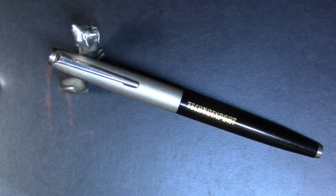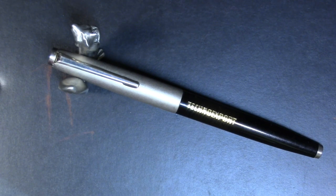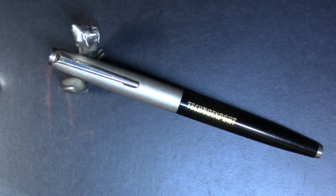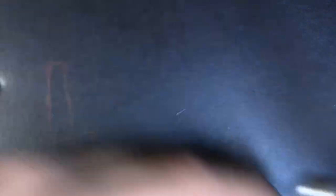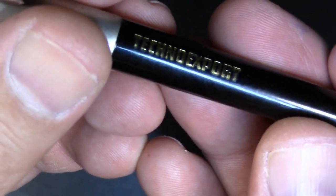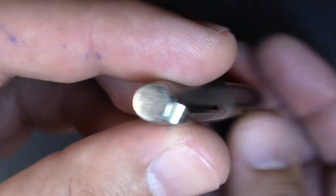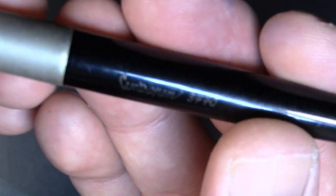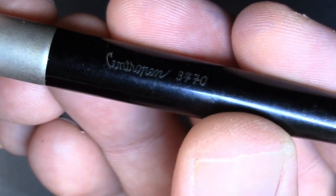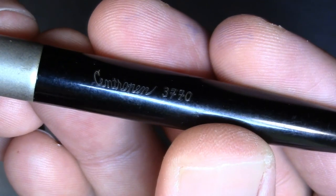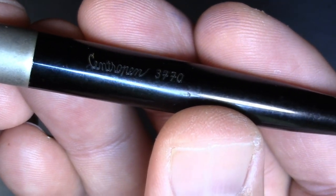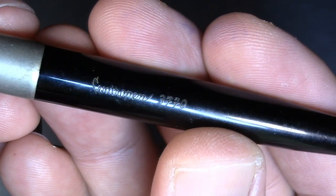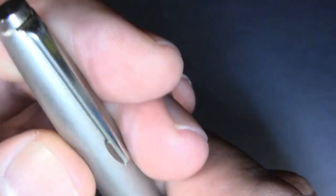All right, so we have here a Techno Export. That was the name under which Central pens were sold to the Western market. Let's take a closer look. Techno Export, got a clip thingy on the finials, and then here it's also branded for selling in the eastern market, so it says Central Pen 3770. Open it up.